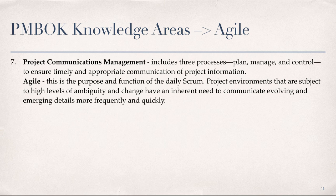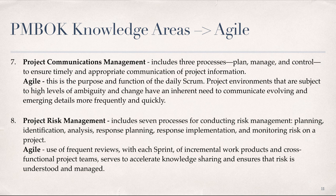Project Communications Management includes three processes — plan, manage, and control — to ensure timely and appropriate communication of project information. In Agile, this is the purpose and function of the daily scrum. Project environments subject to high levels of ambiguity and change have an inherent need to communicate evolving and emerging details more frequently and quickly. Project Risk Management includes seven processes: planning, identification, analysis, response planning, response implementation, and monitoring risk on a project. In Agile, frequent reviews with each sprint of incremental work products and cross-functional project teams accelerate knowledge sharing and ensure that risk is understood and managed.